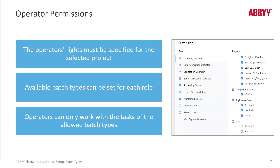Operator permissions is a huge part of this. Within one project, I can set a permission for HR and one for manufacturing. In the Administration and Monitoring Console, I can give certain users — the HR folks — access to just the HR batch type, and manufacturing employees only get access to the manufacturing batch type. That prevents manufacturing people from accessing HR batches, which would be a big problem.